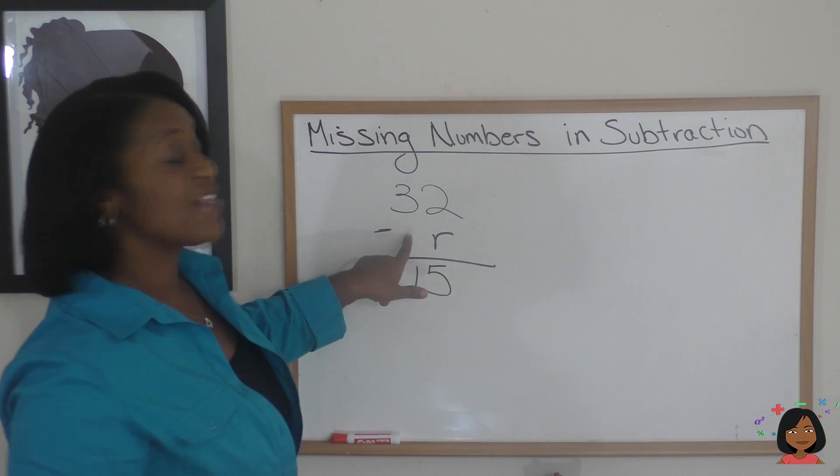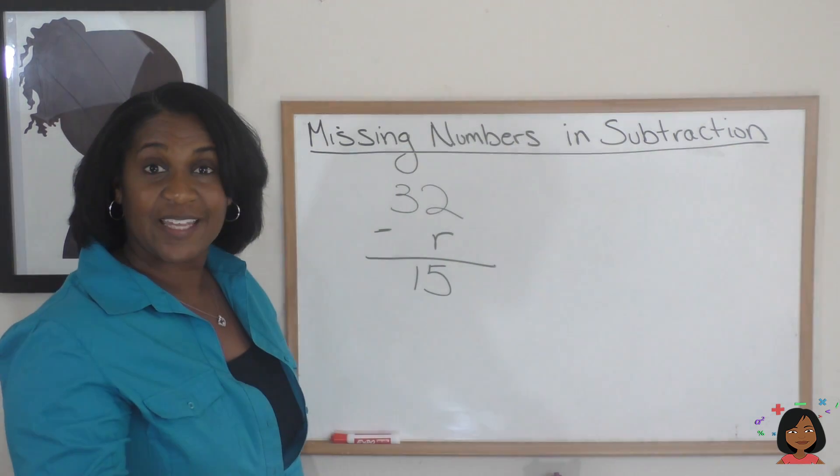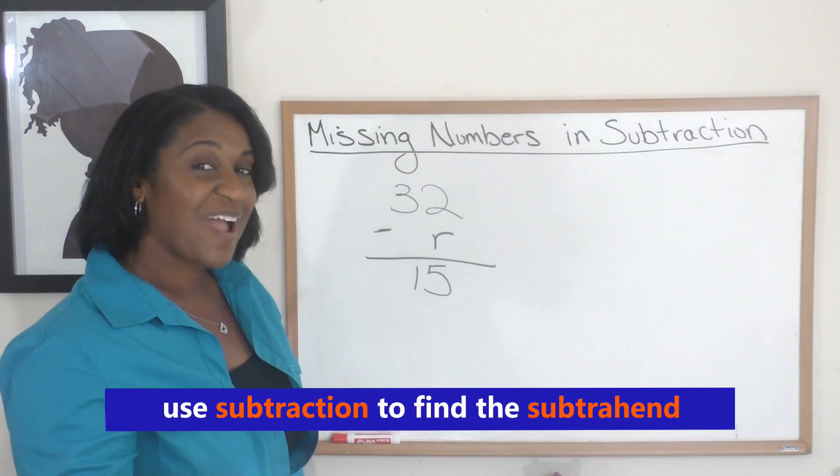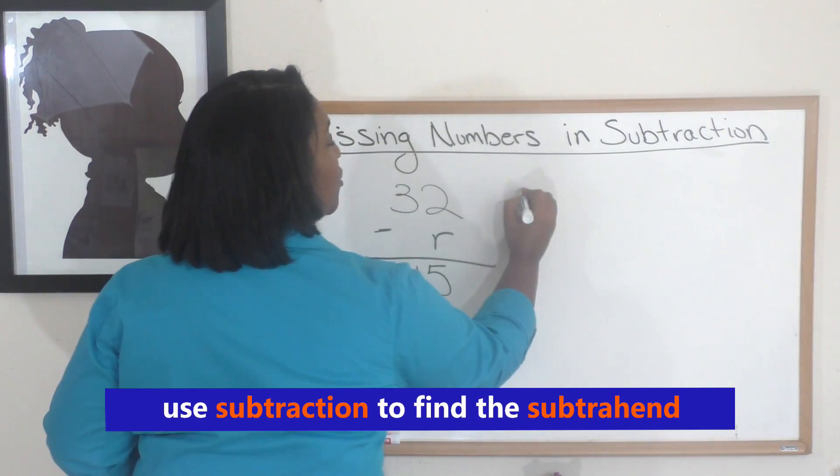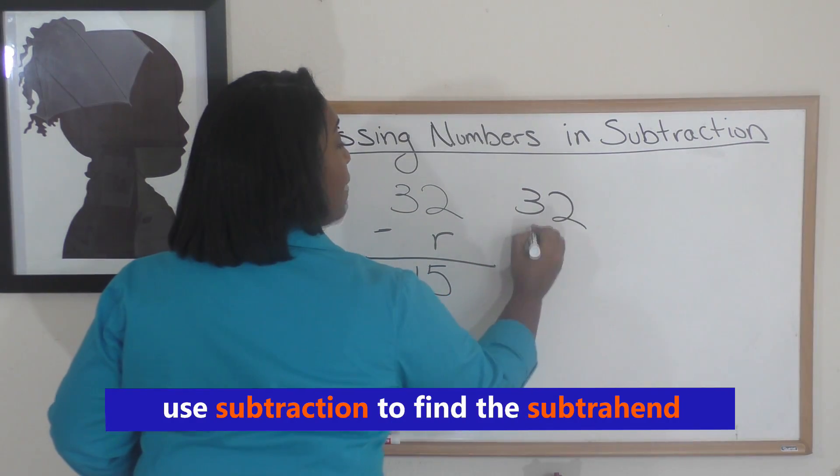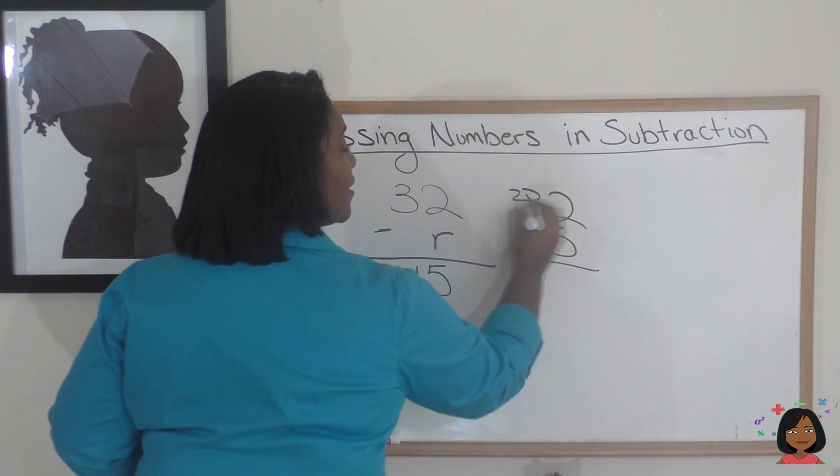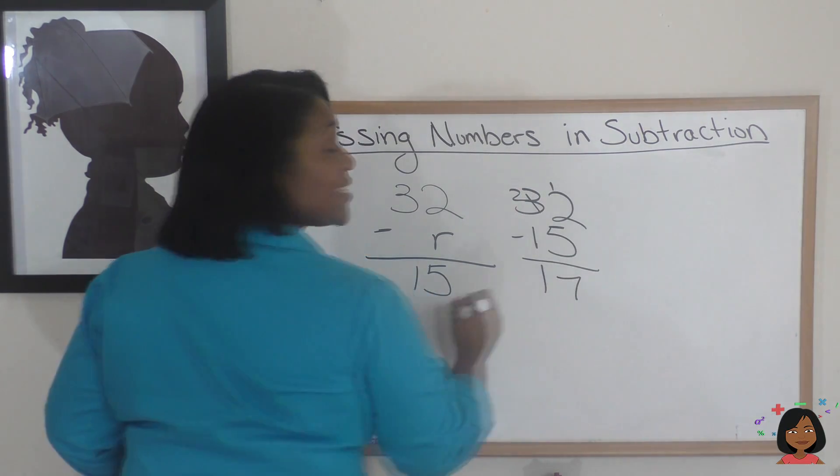So because I am missing this number, we know that I can use subtraction. That's right. I can do 32 minus 15, and that gives us 17.